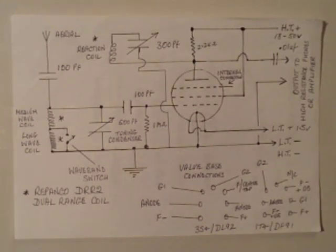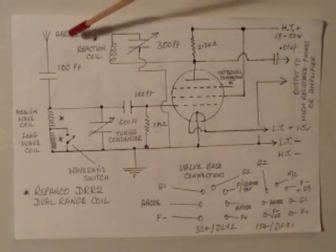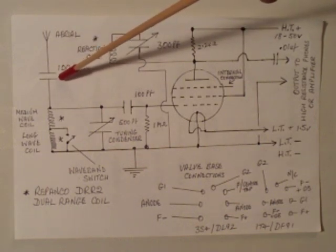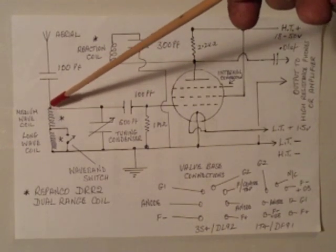The aerial, which can be around about 30 foot of wire just slung over somewhere, it's nothing special just as long as it's pulled out and thrown over a fence or something like that. That passes through a 100 puff capacitor. That feeds the aerial coil, the top end of the aerial coil.